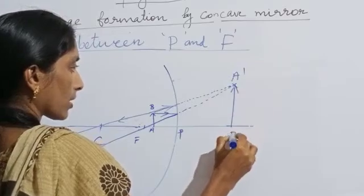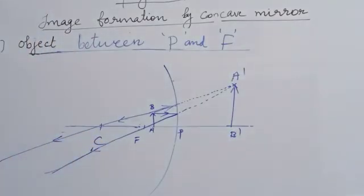It is an erect image. It is found behind the mirror. It is an erect image and also it is enlarged. These are the characteristics of image formed by the object which is placed between P and F.